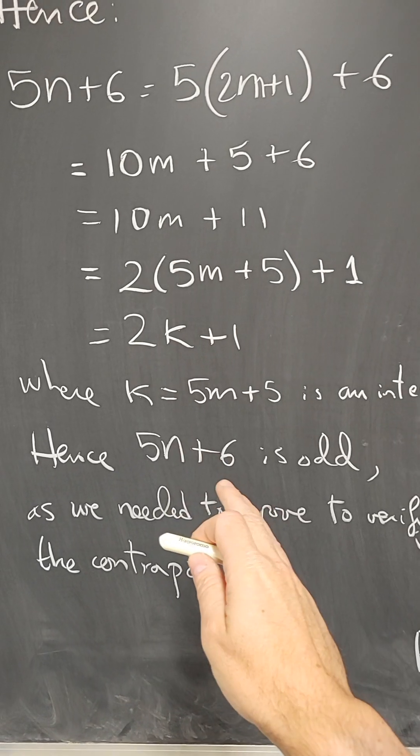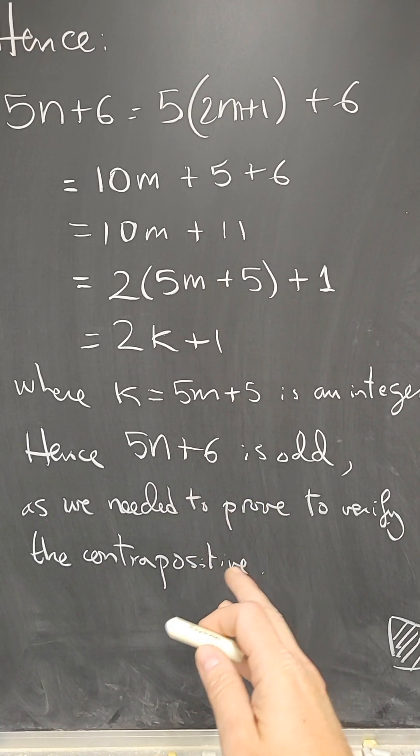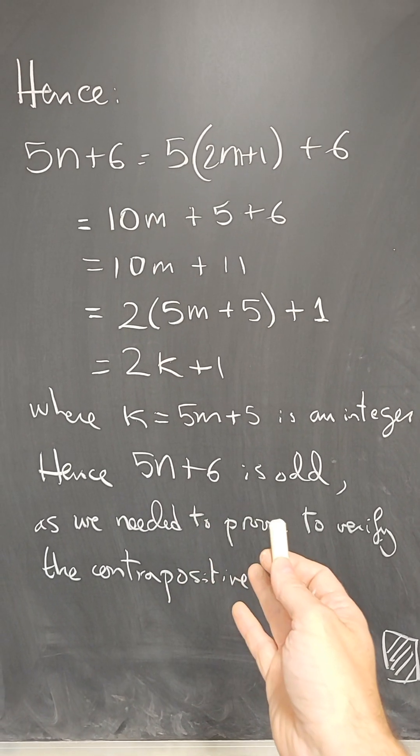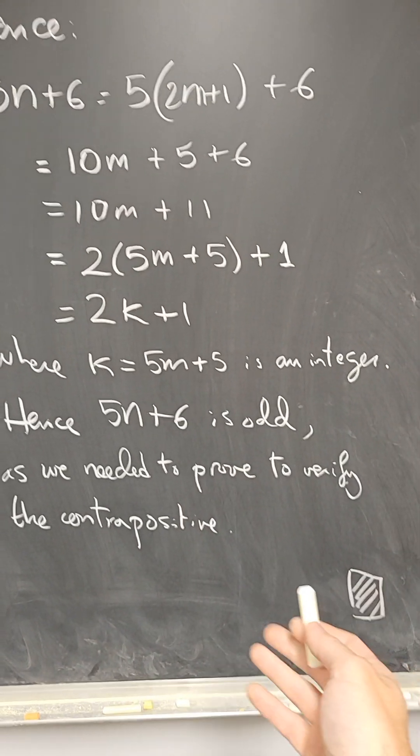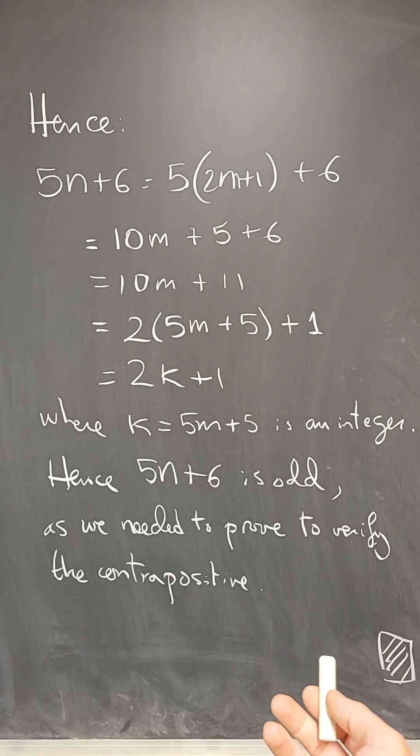And therefore, that means that 5n plus 6 is odd, which proves the contrapositive of the statement I wanted to show. So that proves the statement I wanted to show. And now that I've proved both directions of the if and only if, the proof is complete.